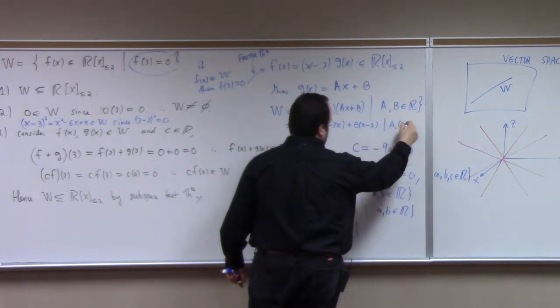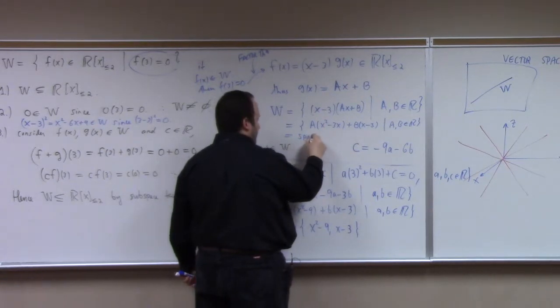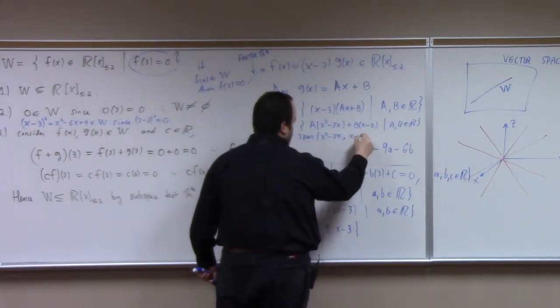So my calculation shows us that it's equal to the span of x squared minus 3x and then x minus 3.